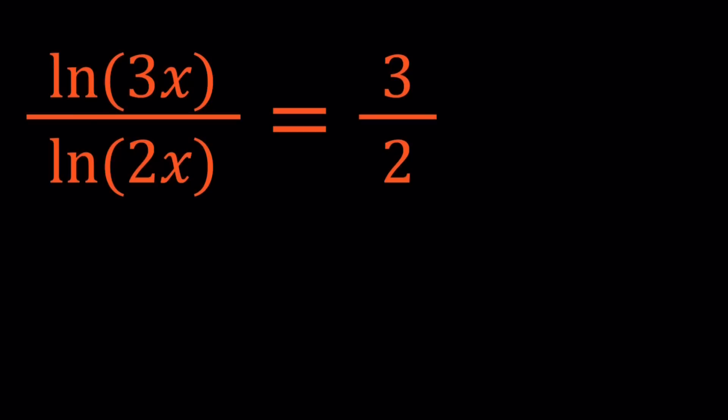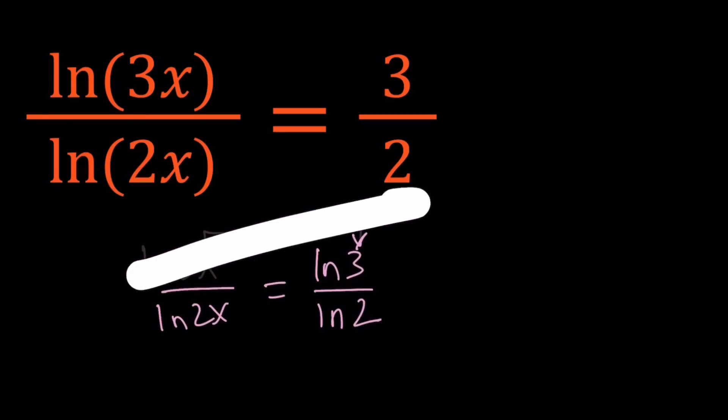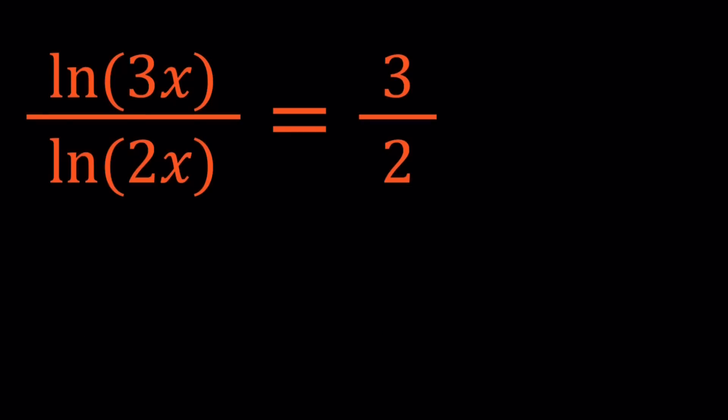We have ln(3x) over ln(2x) equals 3 over 2. We could have something like ln(3x) over ln(2x) equals ln(3) over ln(2), but it will be super duper simple, don't you think? Because in this case, then x would be 1 right away. Is there another solution? That's a good question to ask. You can explore that in your own time. But let me go ahead and get to this problem.